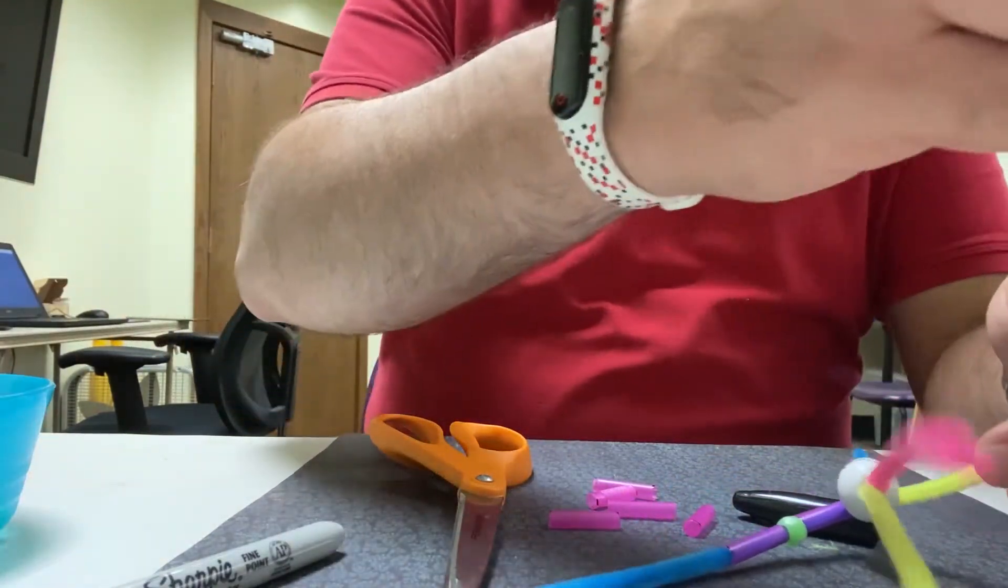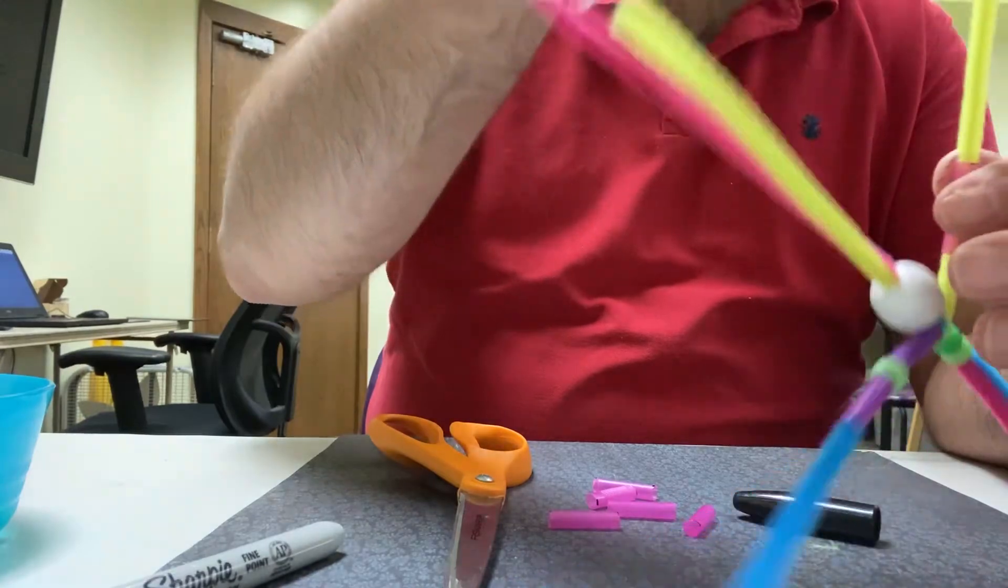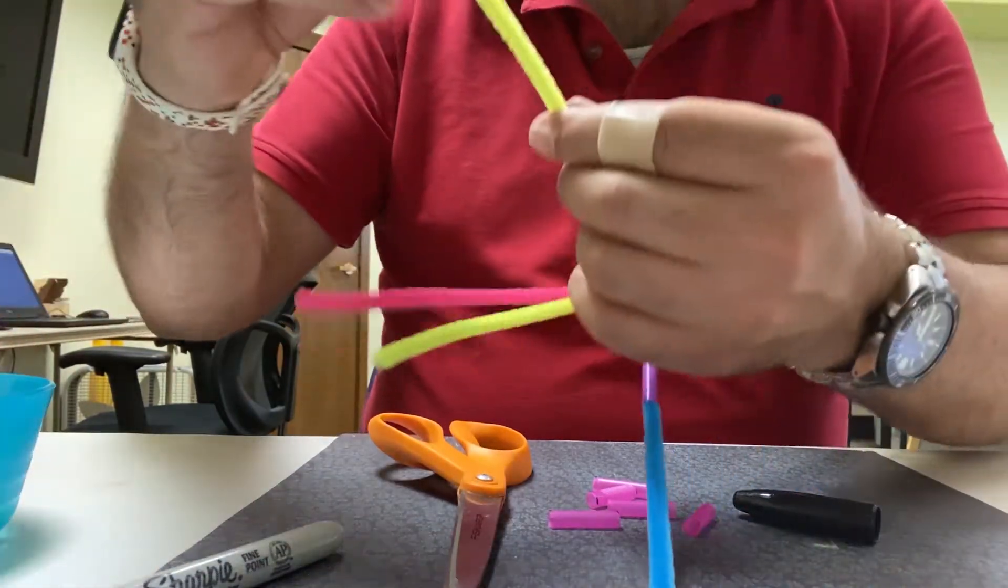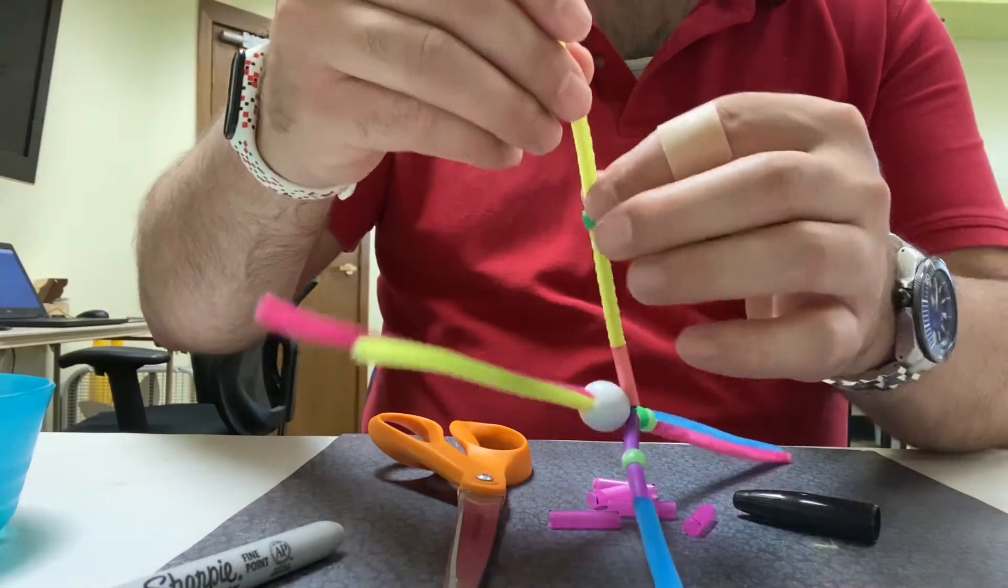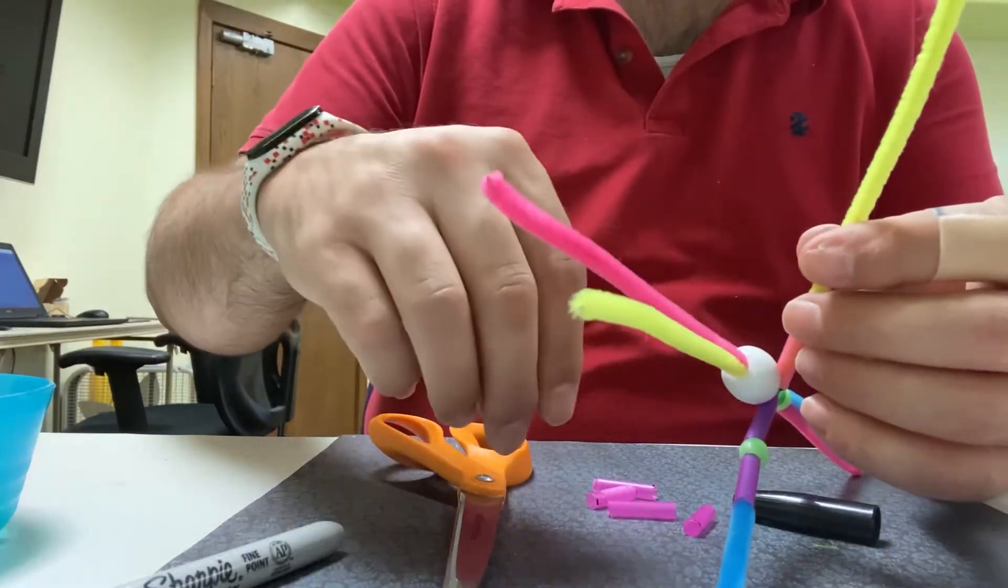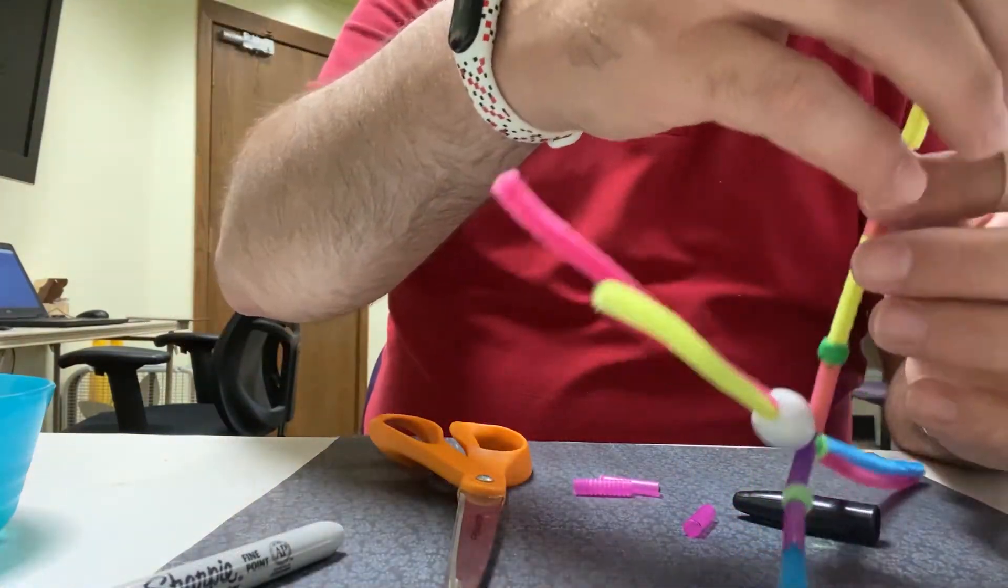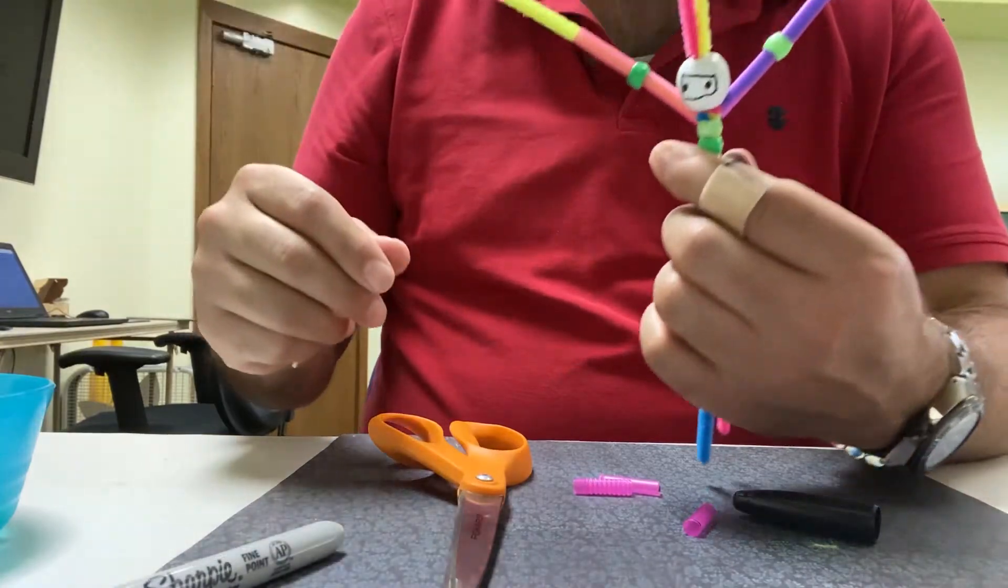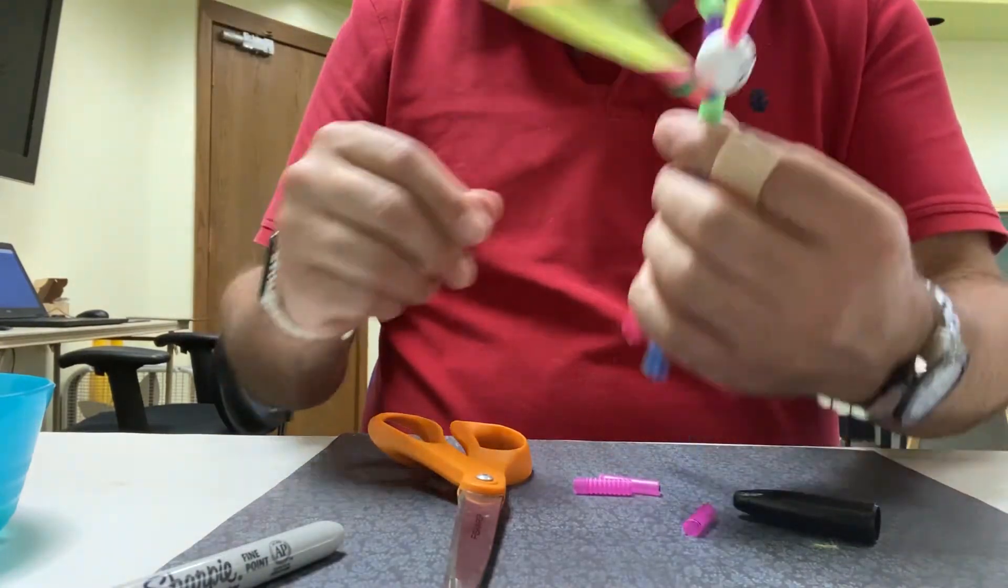So we're going to take more straw and then we'll take another pony bead and another straw. Perfect. Now as you can see we have two arms already ready.